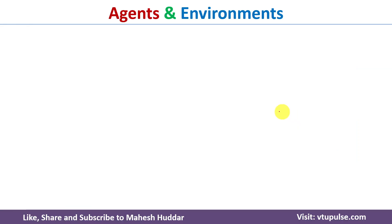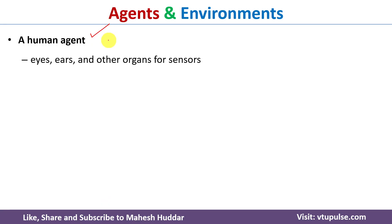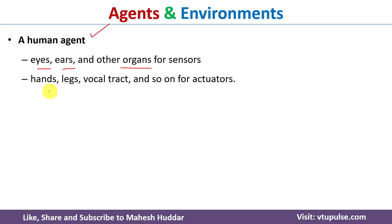Now we will see some examples for agents and environments. If we consider a human agent, eyes, ears and other organs act as sensors. Through these, the human will sense the environment, and based on the current situation the human will perform different actions with the help of actuators such as hands, legs, vocal tract, and so on.